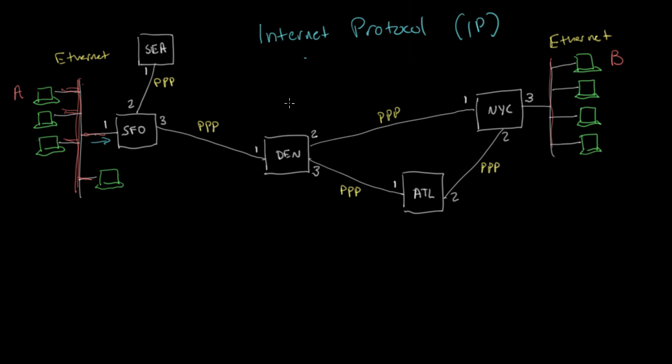And so for that to work, each router needs to have what's called a forwarding table that tells it how to get to each destination. So for example, this router in San Francisco needs to somehow learn that to get to the IP address for this host over here in New York, it should forward the packets out interface three and not interface two or somewhere else.